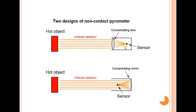The detection by the detector is shown in the picture. The hot objects are shown emitting infrared radiation brightness. The concentrating mirror focuses the radiation onto the sensor.